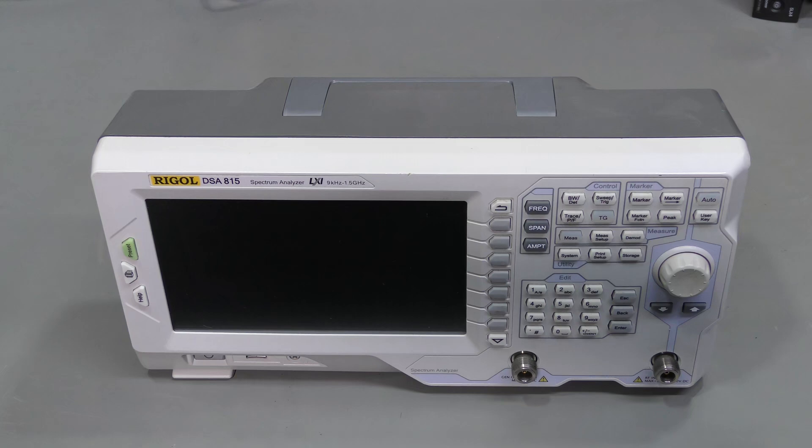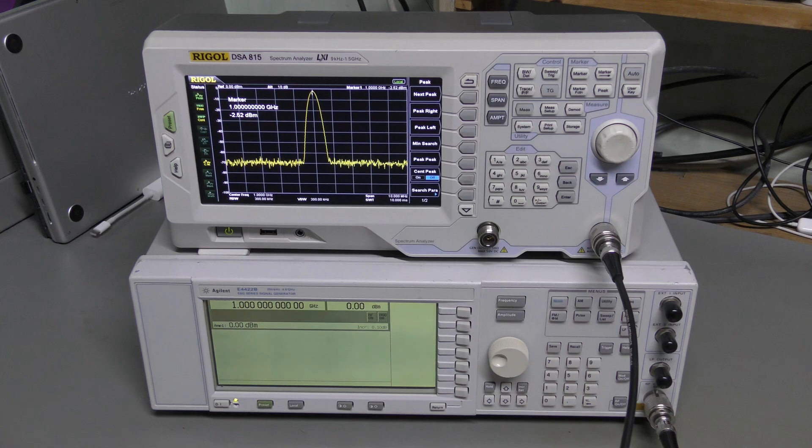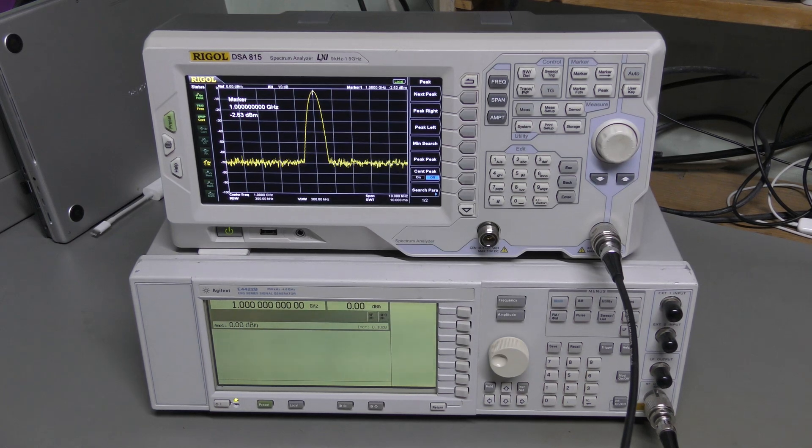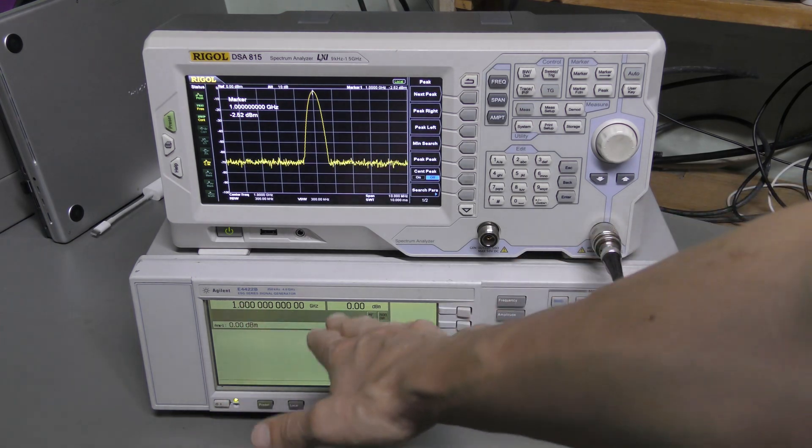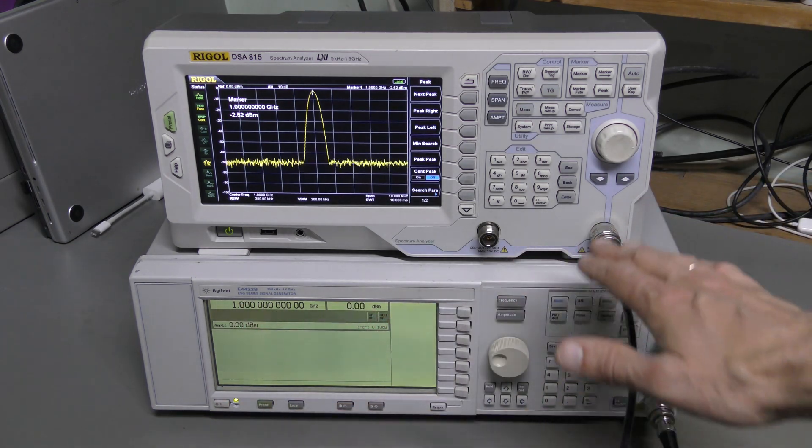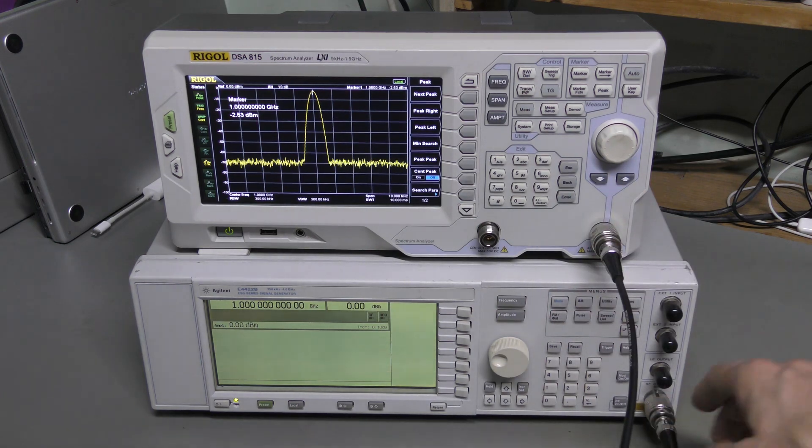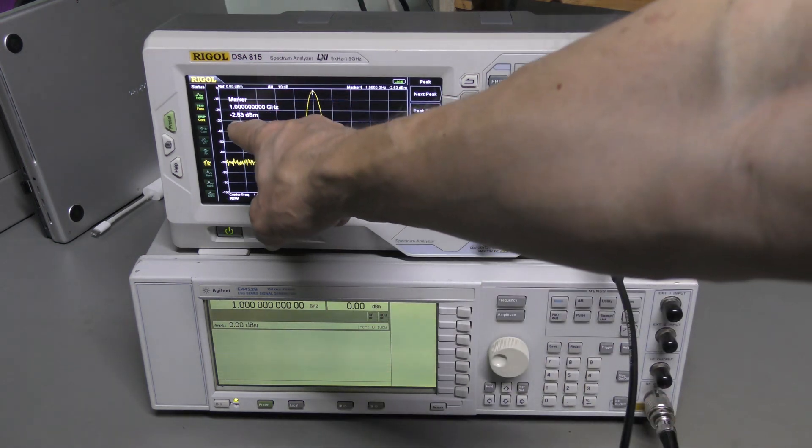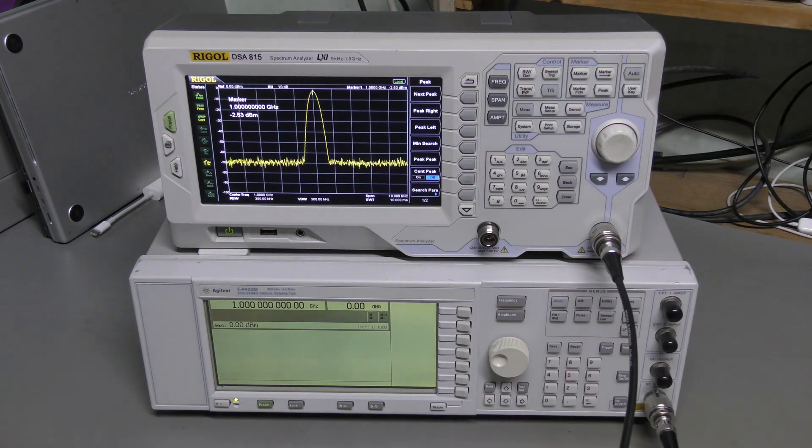I used PIN diodes because it was suggested in some forum, but a viewer later suggested in the comments using TVS diodes instead. And I think it might be a good idea. Let's have a look. Let's start from the same measurement as in the repair video. 1 GHz, 0 dBm, good cable and 2 BNC adapters. And we see about minus 2.53 dBm, which is about the same as in the repair video.